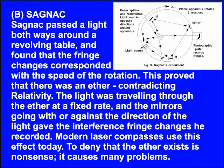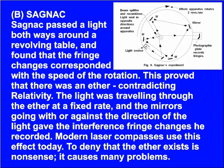In the Sagnac experiment, Sagnac passed light both ways around a revolving table and found that the fringe changes corresponded with the speed of rotation. This proved that there was an ether, contradicting relativity — the light was travelling through the ether at a fixed rate, and the mirrors going with or against the direction of the light gave the interference fringe changes he recorded. Modern laser compasses use this effect today. To deny that the ether exists is nonsense.